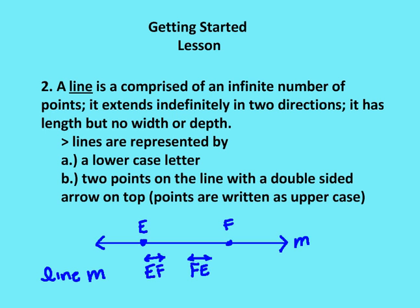Or I can write it as two points on the line, so capital E, capital F, which are on the line, with a double-sided arrow on top. And again, the points are written as uppercase. And you can choose any point on this line. So for example, if I have point G here, I can also write the line as FG.